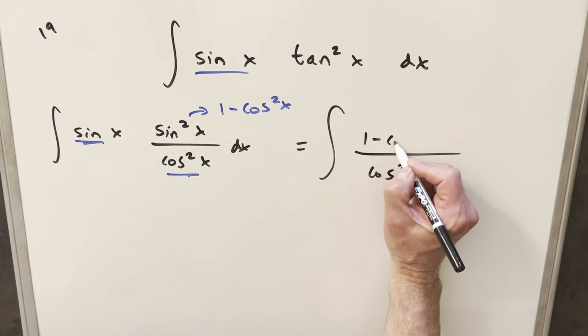We have the integral of sine x times tan squared x dx. Now the thing that jumps out to me is when we're doing trig integrals, we usually want functions that work well together. If we have sine, we want cosine, or if we have tangent, we want secant.